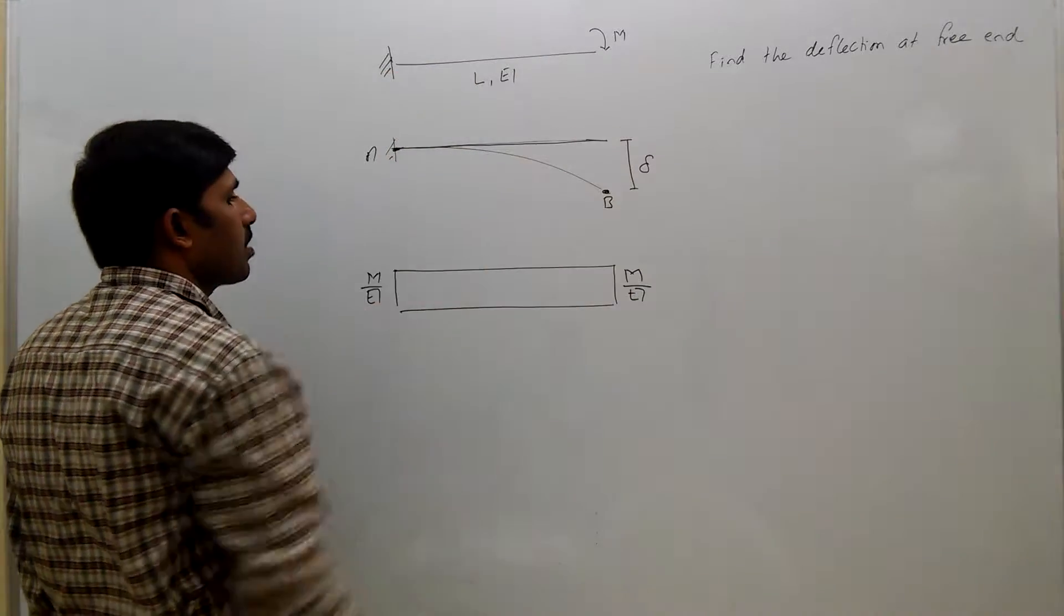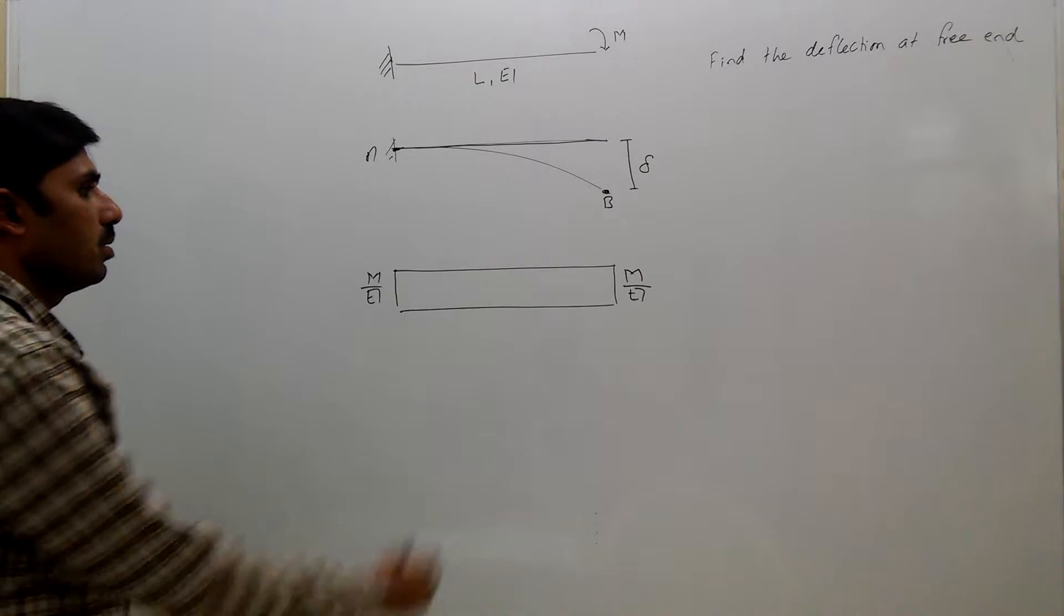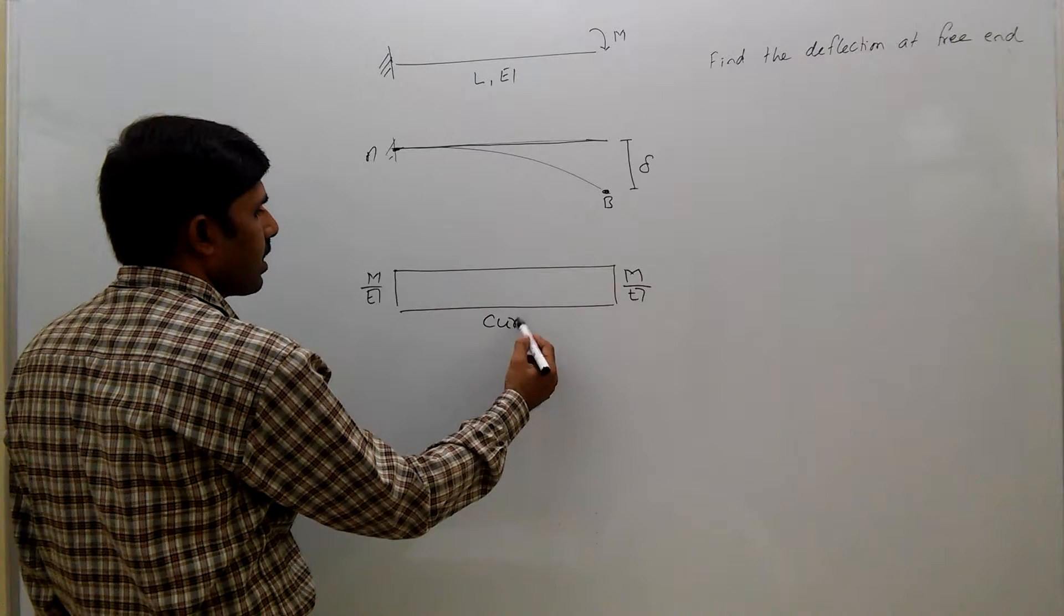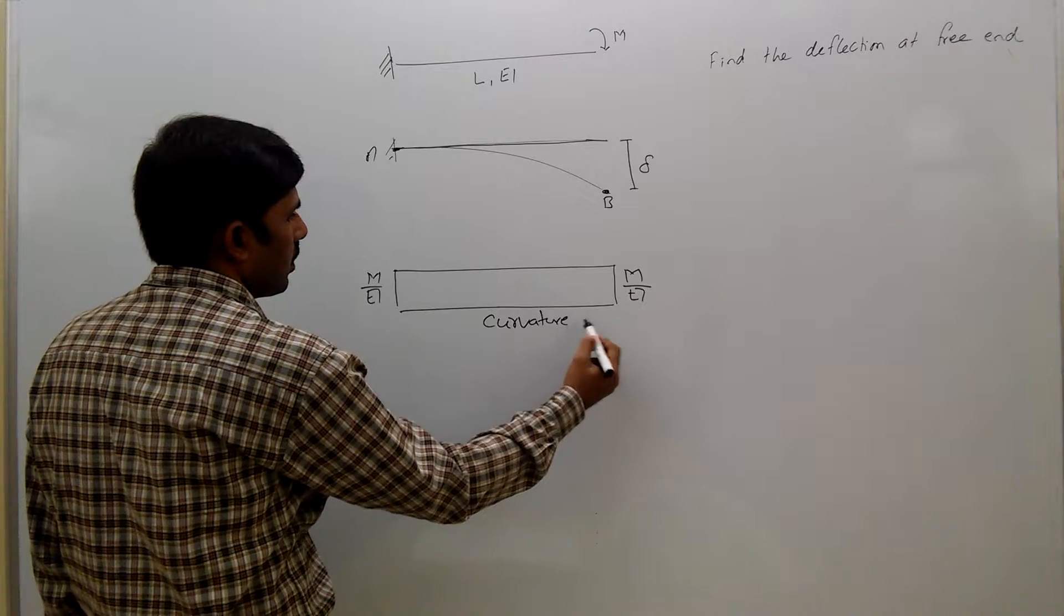Because throughout the beam, EI is constant, simply dividing M by EI, we will get the curvature diagram.